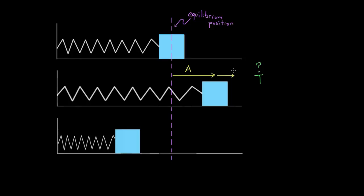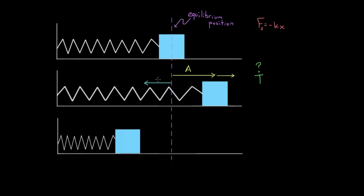Some of you might say yes, it should increase the period, because now the mass has farther to travel — instead of traveling through this smaller amount back and forth, it has to travel through a larger amount. But some of you might also say: if we pull the mass farther, Hooke's Law tells us the spring force is proportional to the stretch, so there'll be a larger force, which causes a larger velocity at the equilibrium position. Since it moves faster, maybe it takes less time. It turns out those two effects offset exactly — the mass travels farther, but also moves faster, and these cancel perfectly, so the amplitude does not affect the period at all.